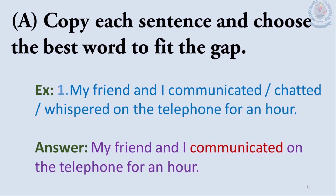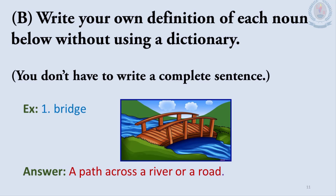Another example: field and meadow are synonyms with slightly different meanings. A field is an area of open ground planted with crops or grass, but a meadow is a field of long grass and wild flowers. Both field and meadow have similar meanings, so they are considered synonyms. Part A: Copy each sentence and choose the best word to fit the gap. The answer to the example is: my friend and I communicated on the telephone for an hour.